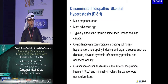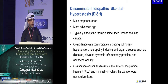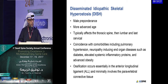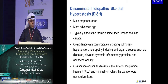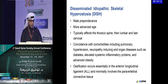What about DISH — Diffuse Idiopathic Skeletal Hyperostosis? Again, there is male predominance, but at a more advanced age compared to ankylosing spondylitis. DISH typically affects the thoracic spine, with the cervical spine being the least involved. It coincides with comorbidities including pulmonary hypertension, neuropathy, end-organ disease such as diabetes, elevated systemic inflammatory proteins, and advanced obesity. Ossification occurs essentially in the anterior longitudinal ligaments.